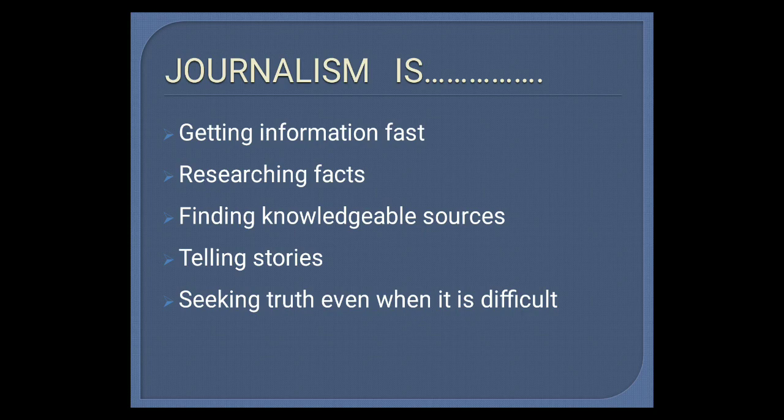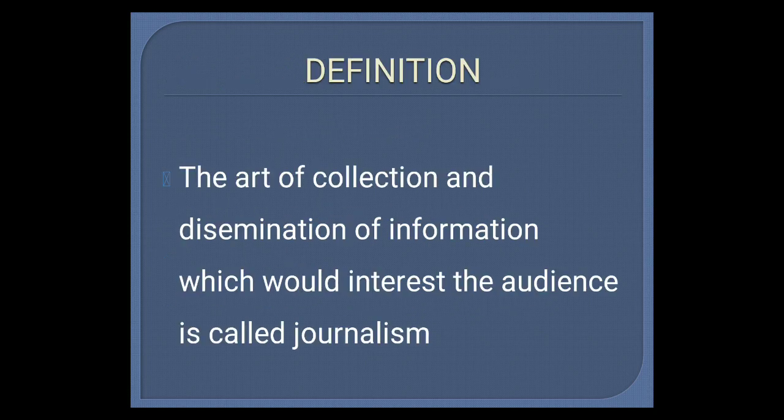So what is journalism? Journalism is collecting the information, researching the facts, finding the sources, and then telling it as a story. It is also mandatory to verify whether it is true or not. Based on this, we can frame a definition: journalism is the art of collection and dissemination of information which would interest the audience.